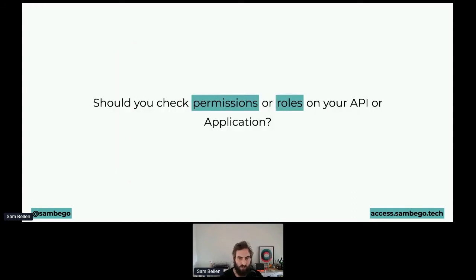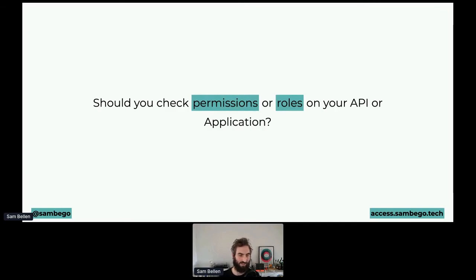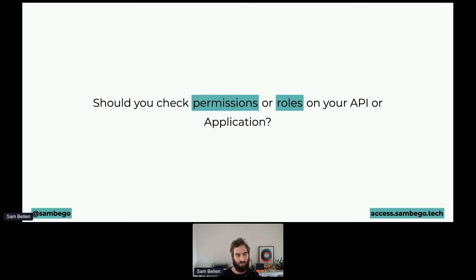Should you check permissions or roles on your API or application? It's a difficult question and depends on how complex you want to make it. I like to check permissions because it gives more flexibility — if in the future some permissions get added to a role or an extra role gets added, it allows you to quickly adjust without breaking your application. But if you have a simple application with just an admin and a regular role, it's sometimes easier to just check for roles. Permissions are a bit more future-proof and fine-grained, while roles are the easiest way to get started.